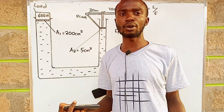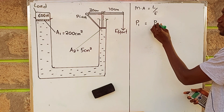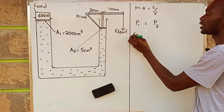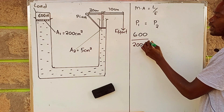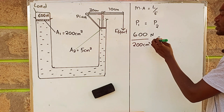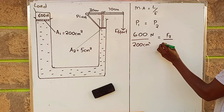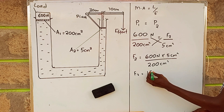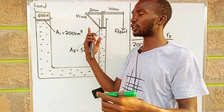So we apply the principle of transmission of pressure — Pascal's principle: pressure in region one equals pressure in region two. Pressure in region one equals force 600 divided by the cross-sectional area of 200 square centimeters. This equals F2 over the cross-sectional area of 5 square centimeters. Solving, F2 is equal to 15 newtons.